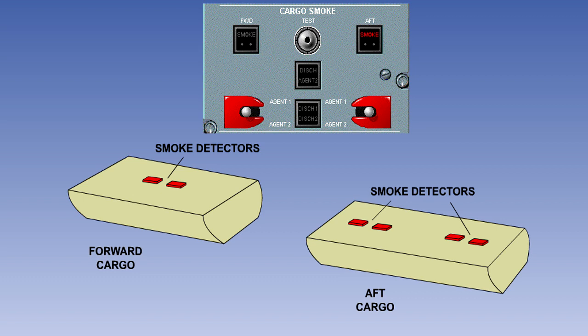If a pair of aft cargo detectors sense smoke, the red smoke light will come on. At the same time, the fire bell or chime will sound. The pilot will cancel the aural warning, then carry out the cargo fire warning checklist.